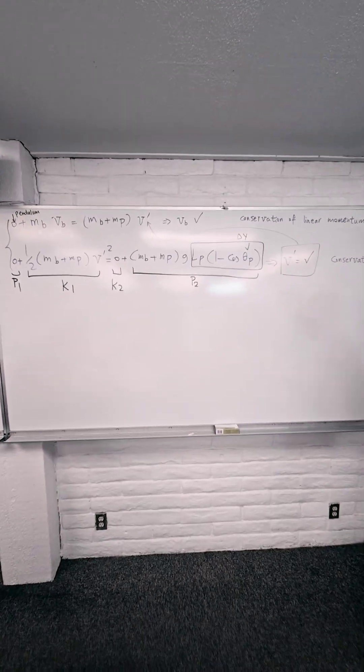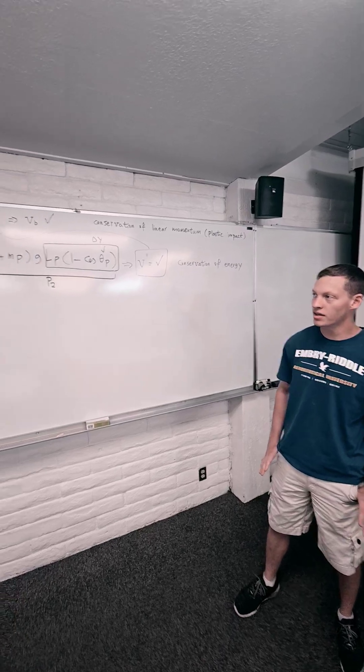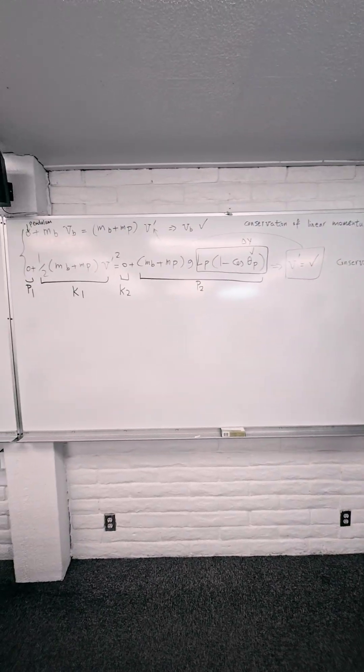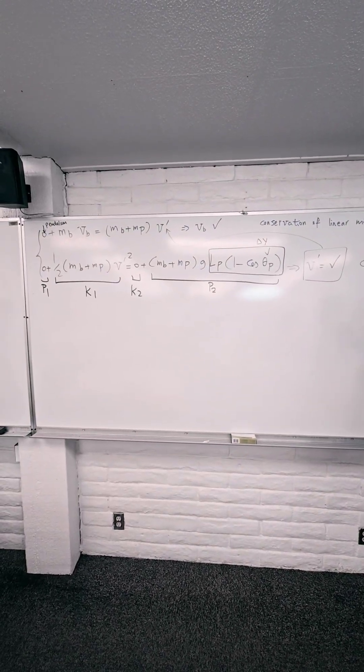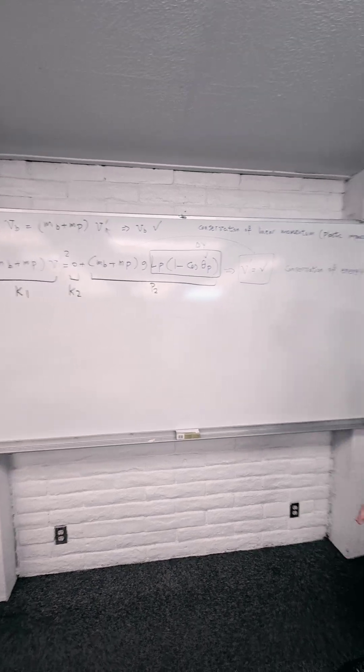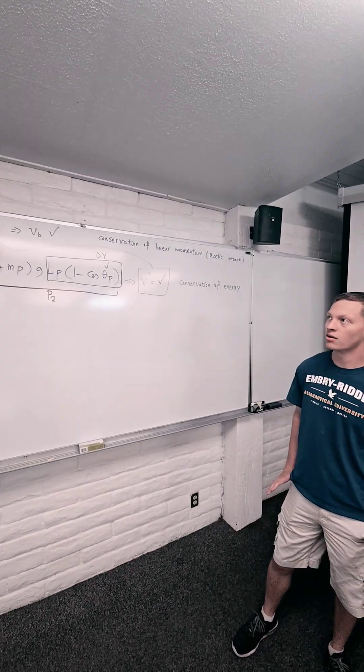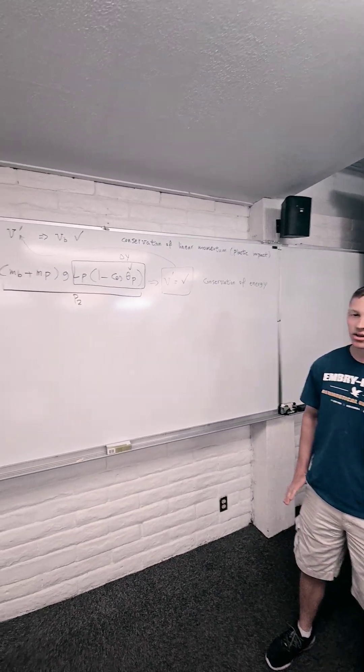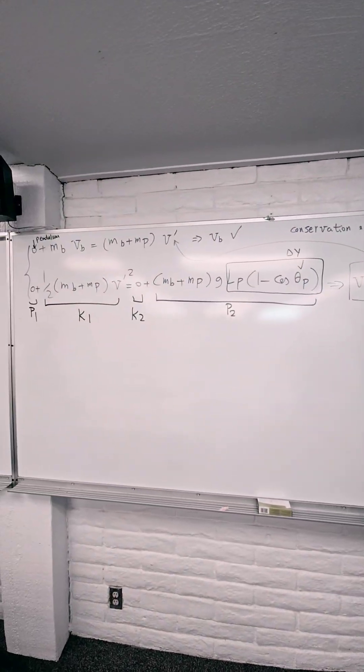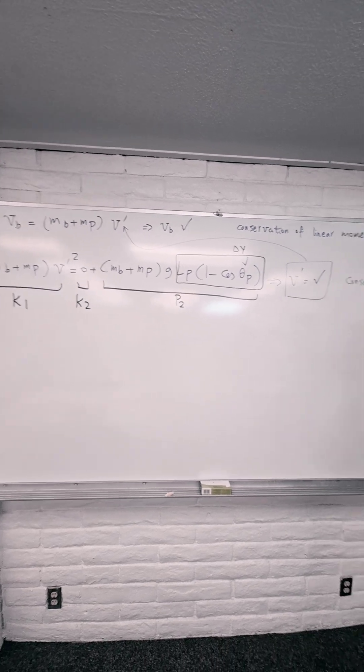So we have two equations, conservation of energy and conservation of momentum. Basically with the conservation of energy, you're going to have a starting kinetic energy and then you're going to end up with a potential energy. There you can solve the final velocity, which then you can plug back into the conservation of momentum, where you can get the initial velocity of the ball shooting out of the pendulum.